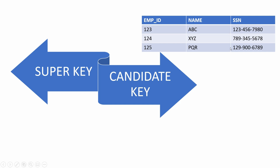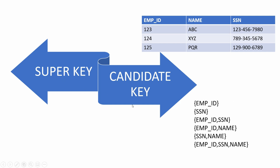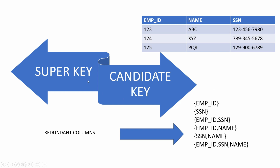Super key, as the name suggests, is the superset of all possible combinations using which we can identify every row uniquely. Apart from employee ID or SSN alone, we can also use the combination of these two with name, or a combination of all three for unique identification. So these six mentioned combinations are super keys for this table.